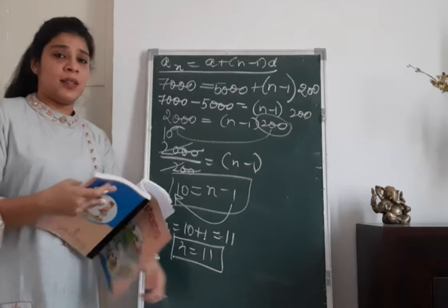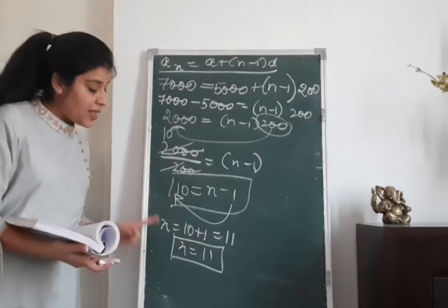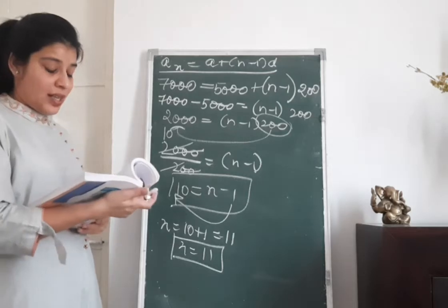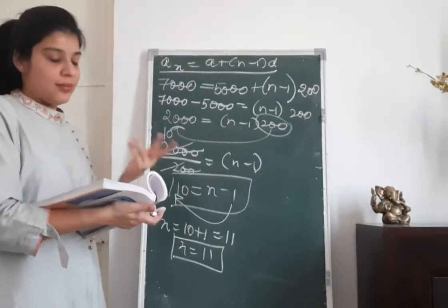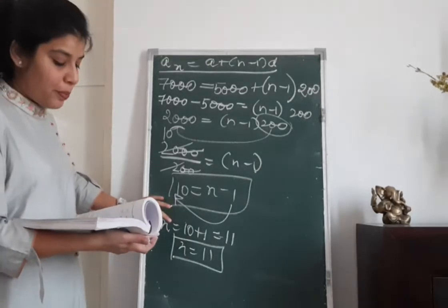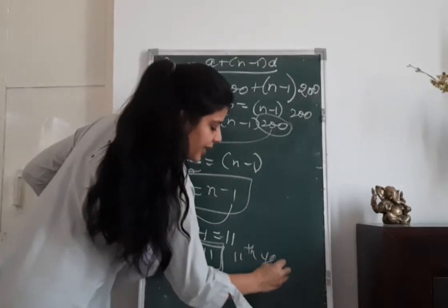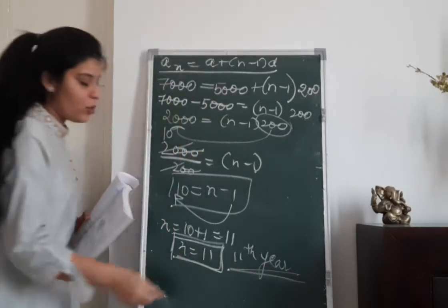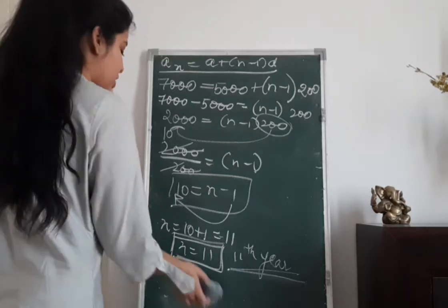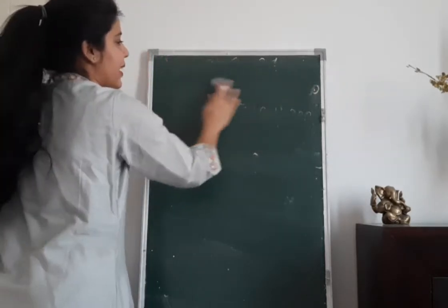So in which year will he be earning rupees 7,000? In the 11th year his salary will be rupees 7,000. Let's move on to the next question — question number 20, which is the last question for this exercise.